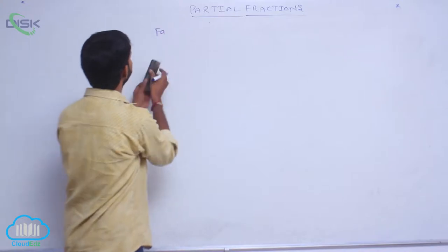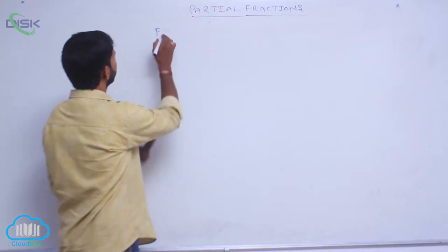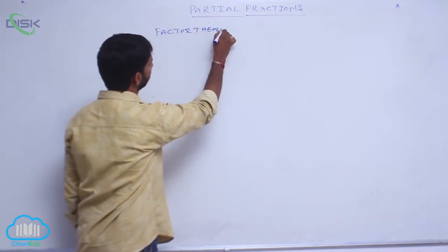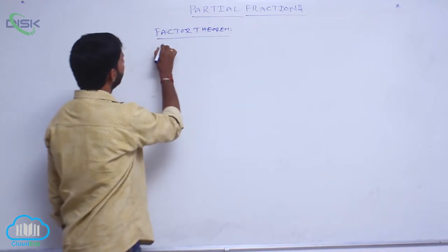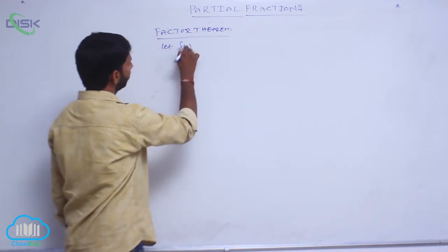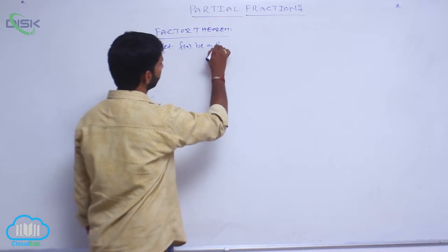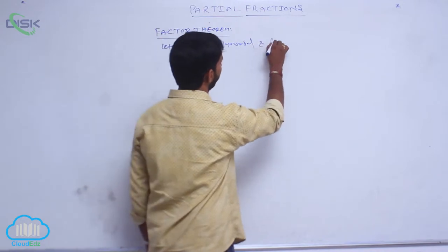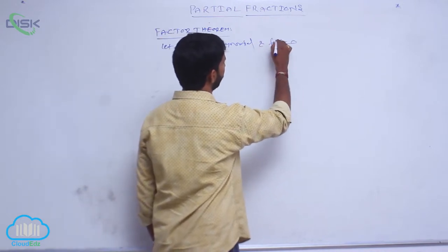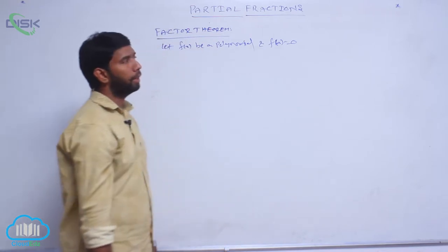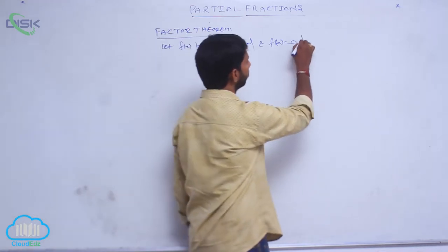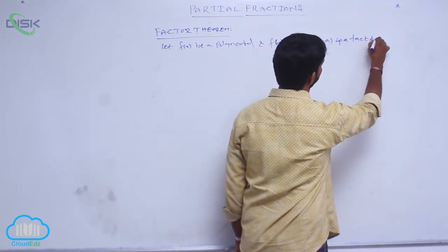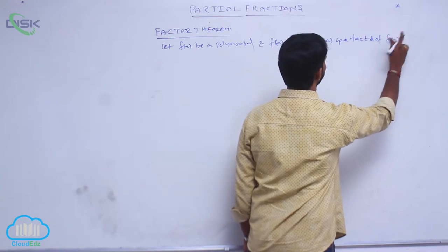Factor Theorem. Let f of x be a polynomial and f of a is equal to 0. Then x minus a is a factor of f of x.